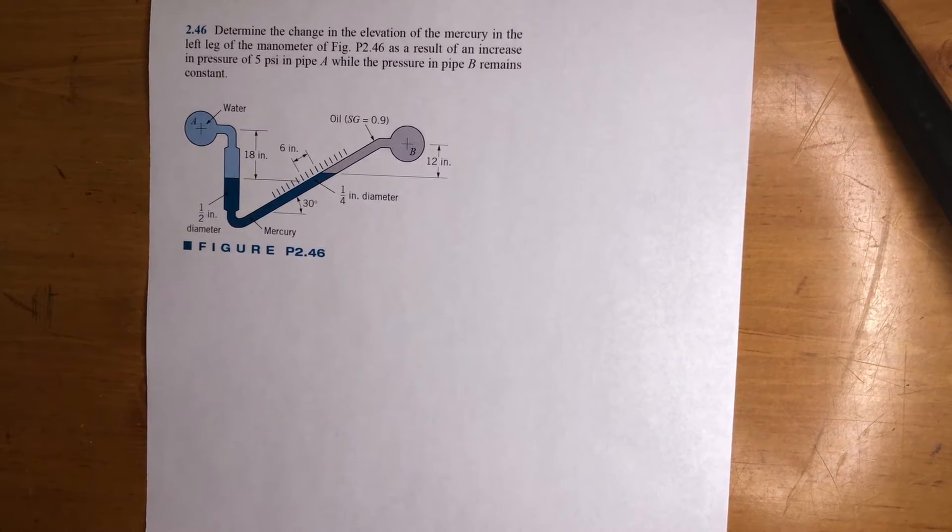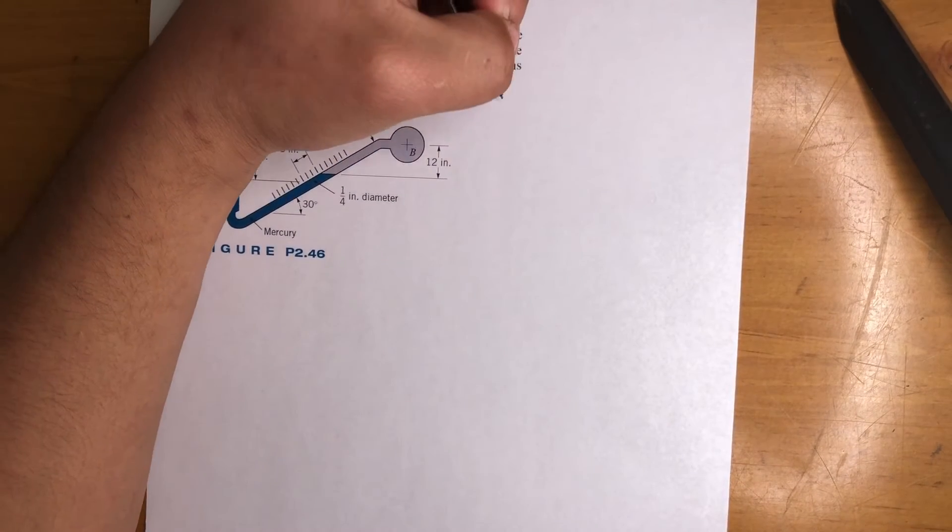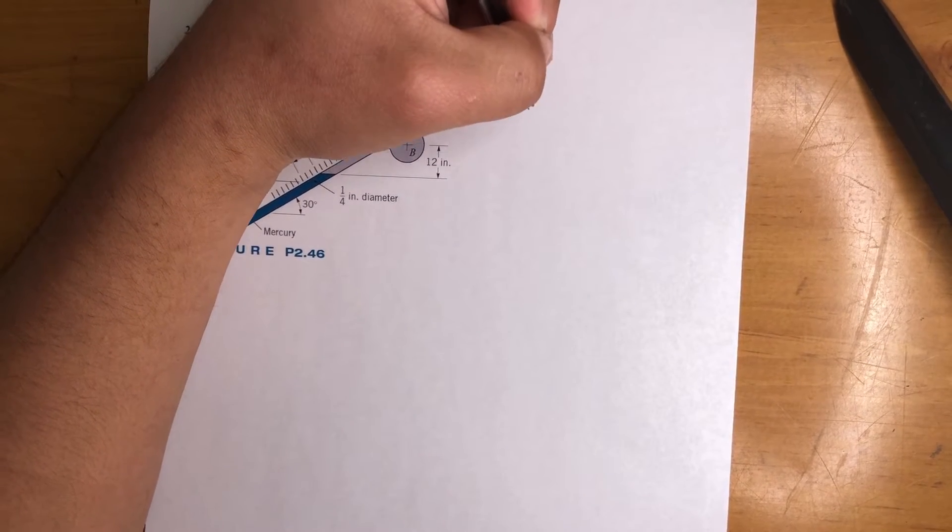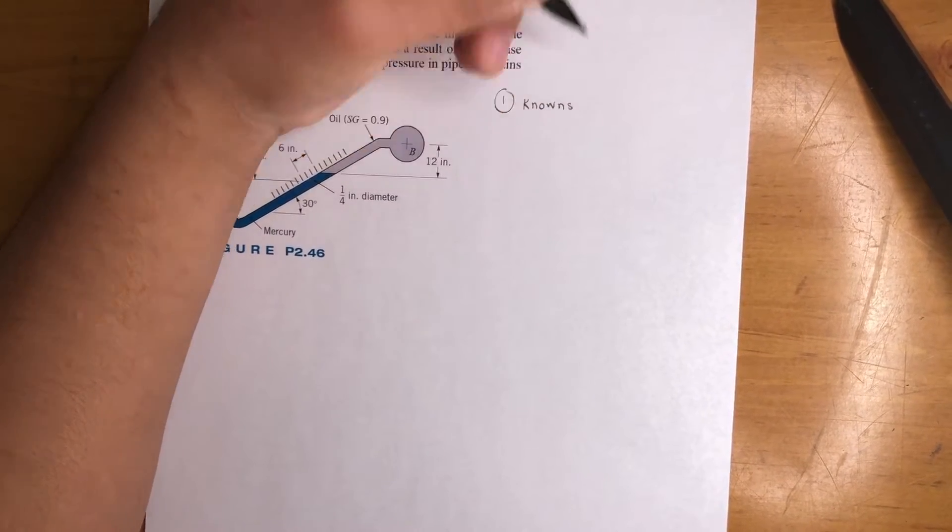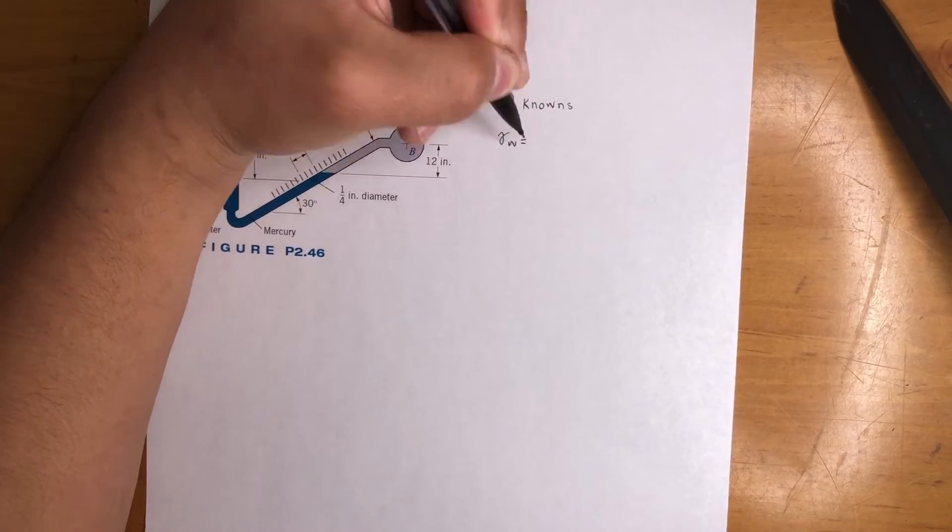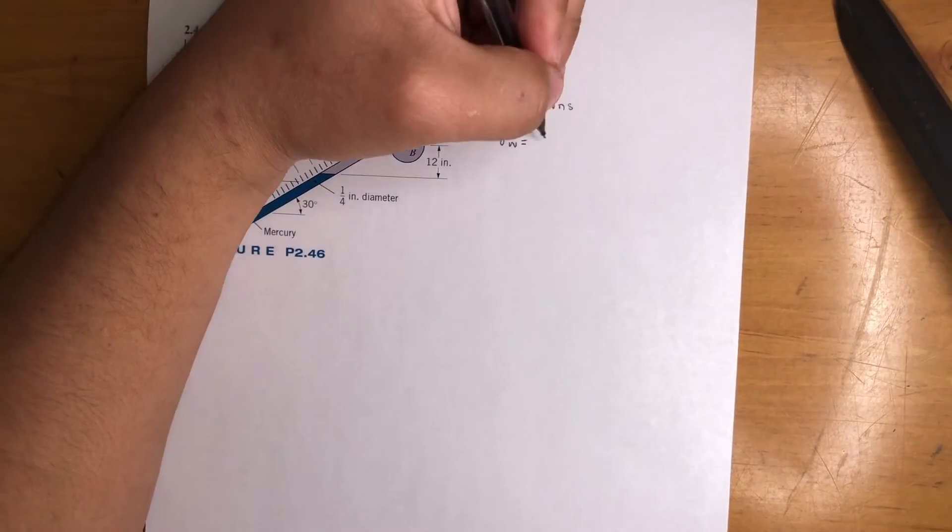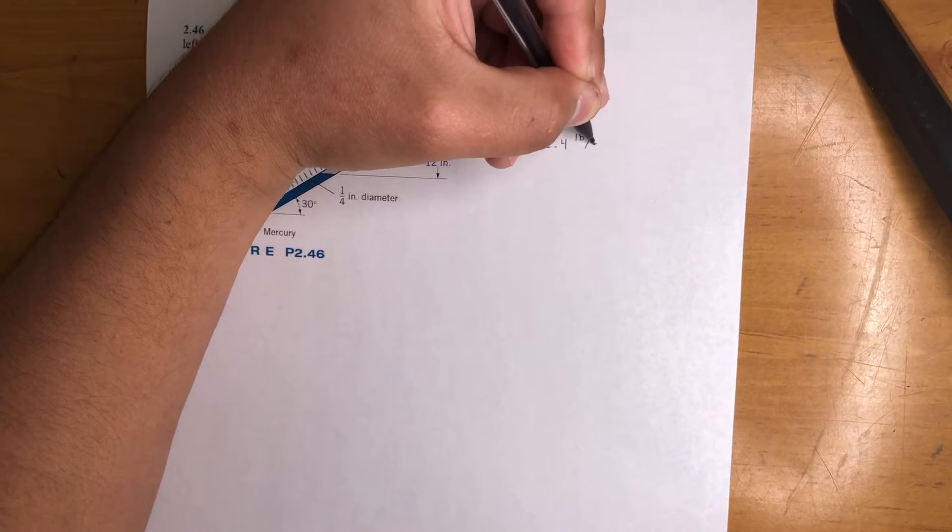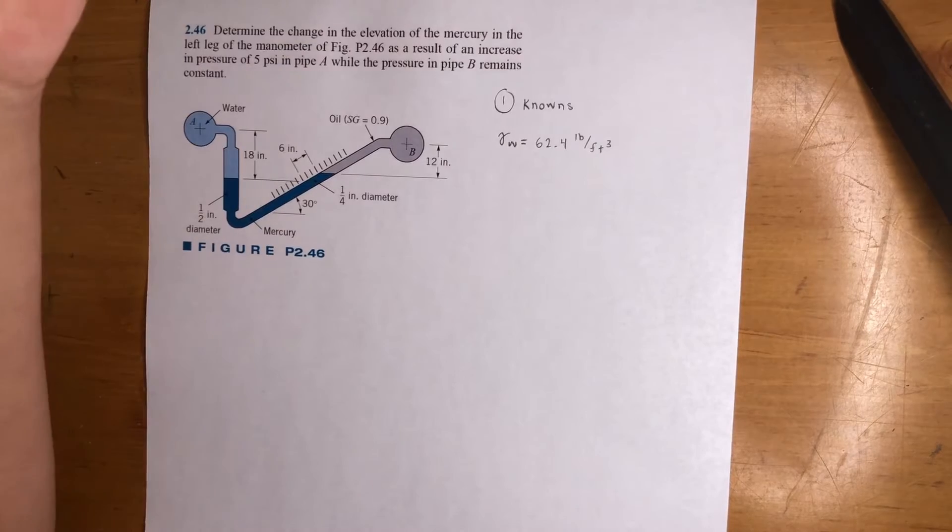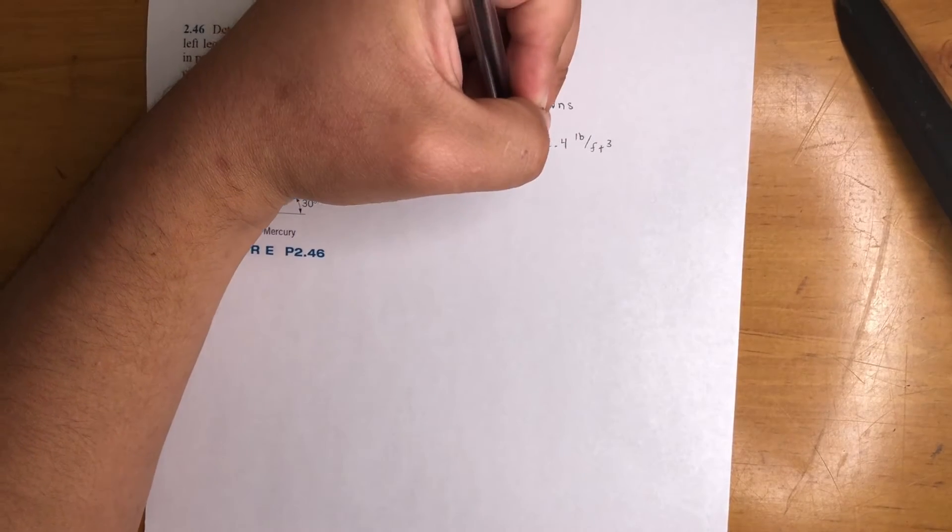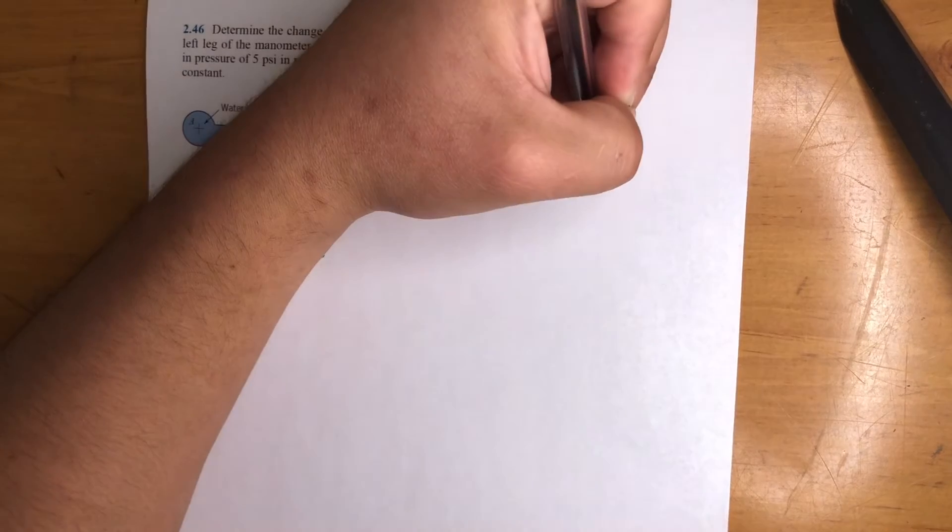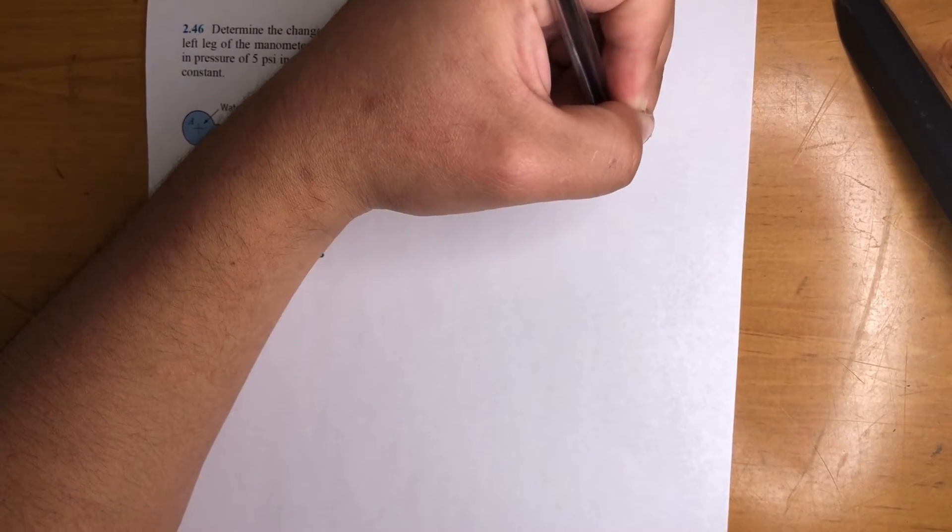When you increase the pressure here, it's going to push this down a distance, but that distance is not the same as this distance. First thing, knowns. We're dealing with water that is in inches. We know it's 62.4 pounds per feet cubed. Converting it, that's going to give us 0.0361 pound per inch cubed.